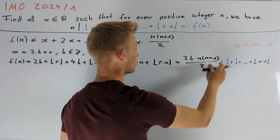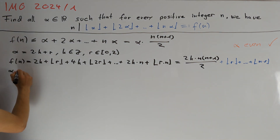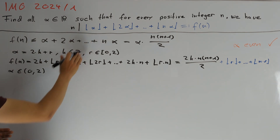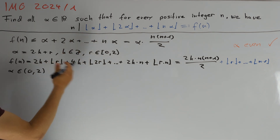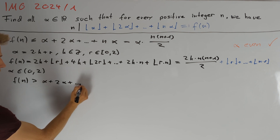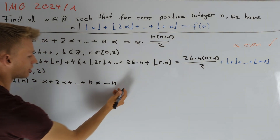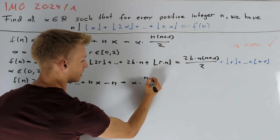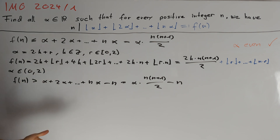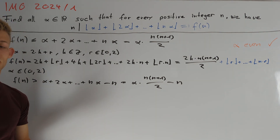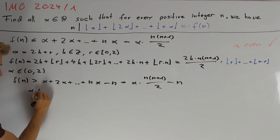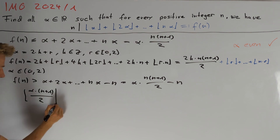We already dealt with the case alpha equals 0, since 0 is even, so it's enough to consider alpha in the open interval (0, 2). Now it's time to write down the second inequality we always get when dealing with floor functions: the floor of a real number is greater than the real number minus 1. So f of n is greater than alpha times n times n plus 1 divided by 2 minus n. These two inequalities imply that f of n lies in a half-open interval of length n. Therefore there is exactly one integer value in this interval that is divisible by n, and we can write this value down: it equals the floor of alpha times n plus 1 divided by 2, times n.